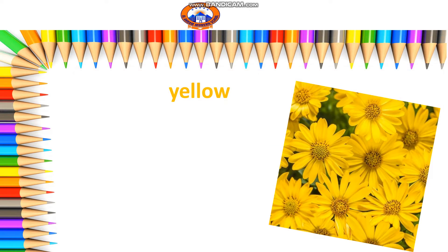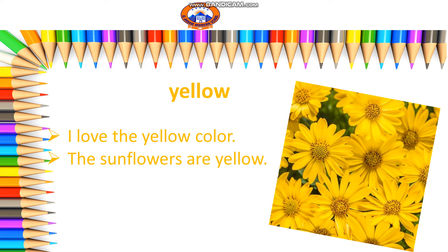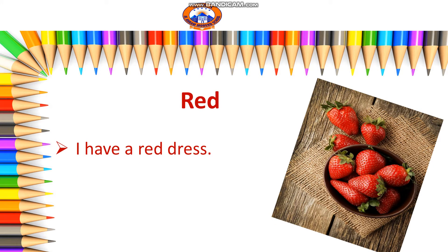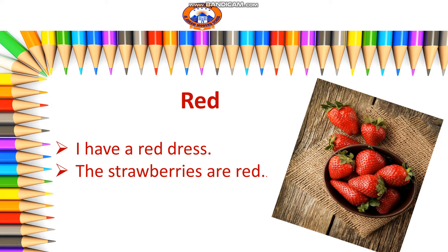Now let's put the words into sentences. The first word is yellow. I love the yellow color. The sunflowers are yellow. Red. I have a red dress. The strawberries are red.